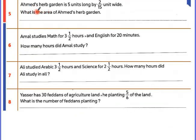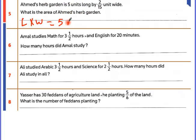Ahmad's garden is 5 units long by 2 over 15 units wide. The area equals length times width: 5 times 2 over 15. Simplify: 5 and 15 cancel, 5 becomes 1 and 15 becomes 3. So the area is 2 over 3.